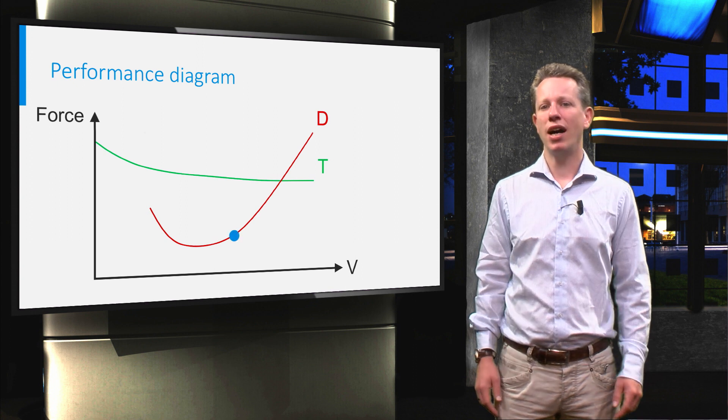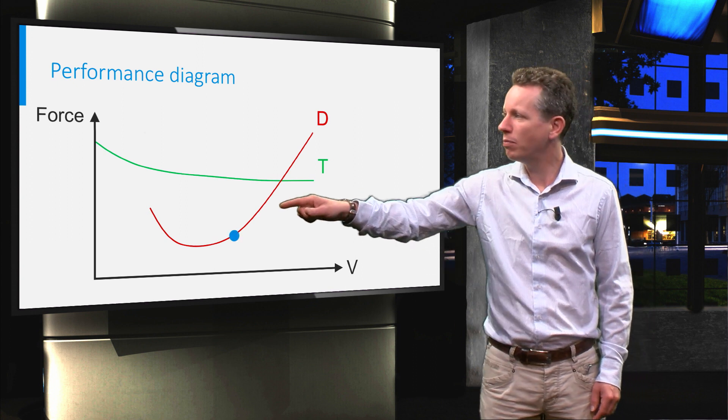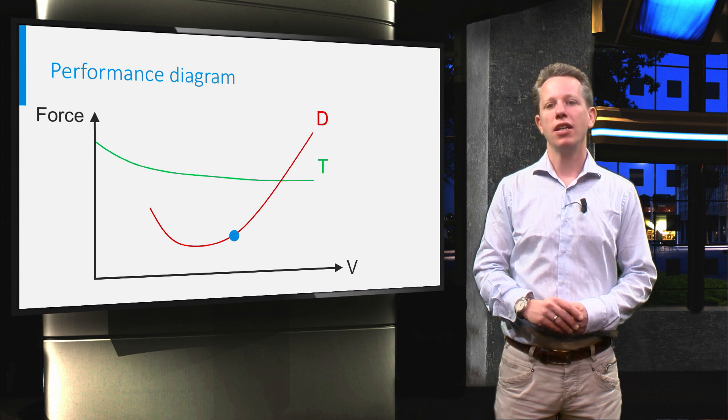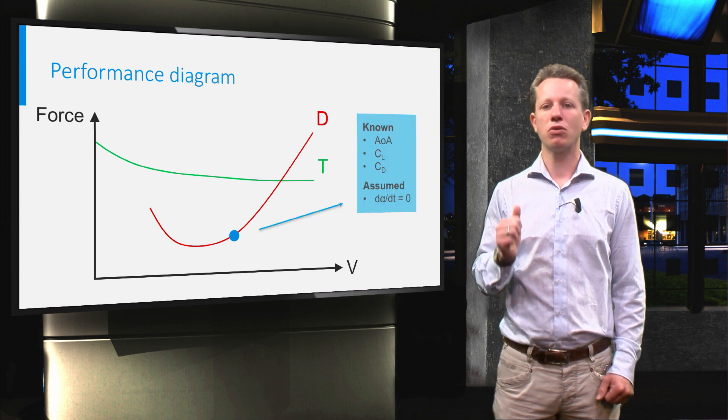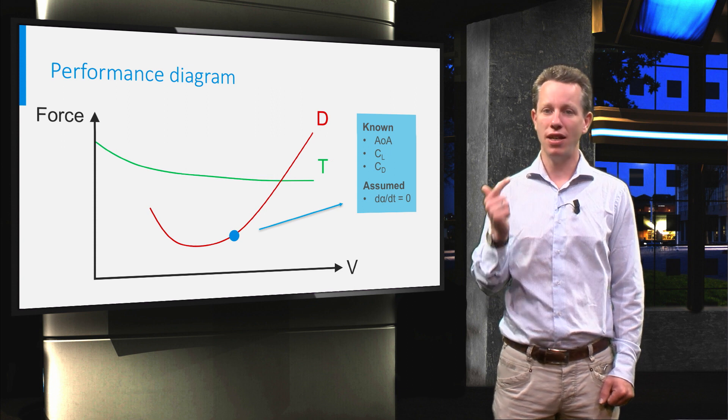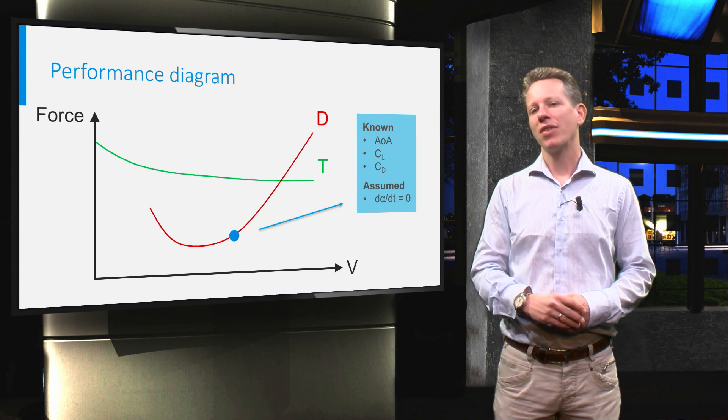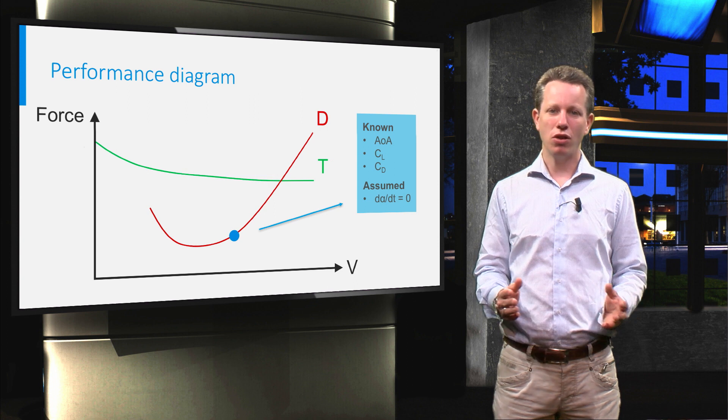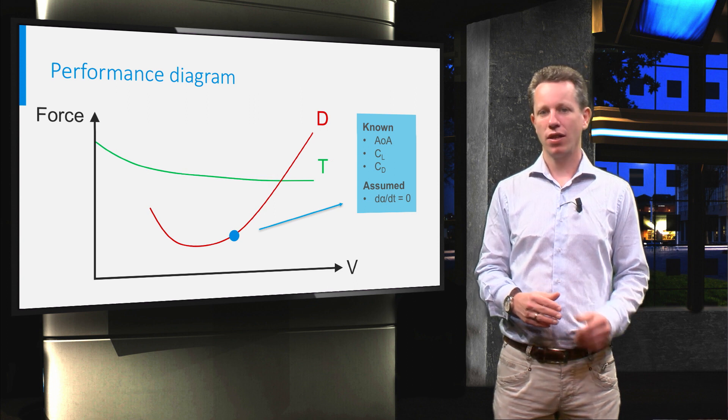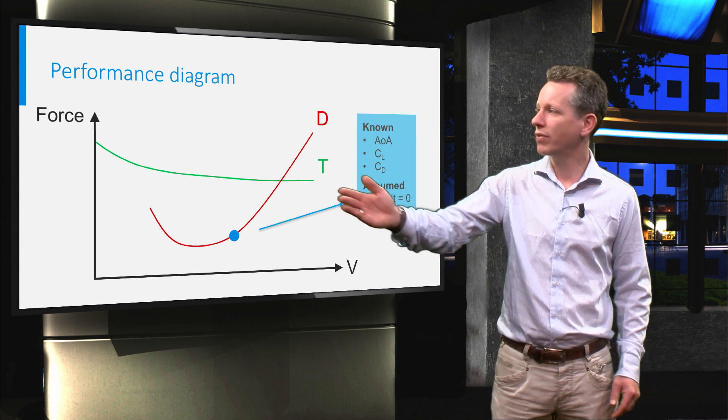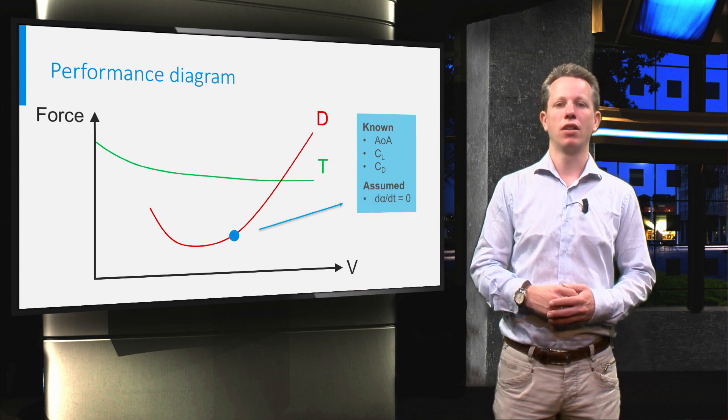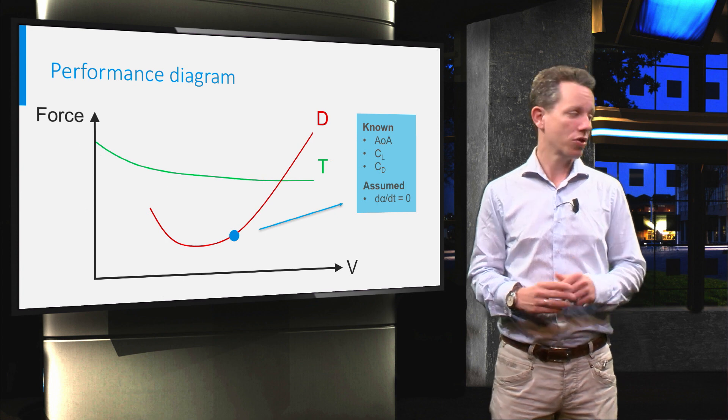To do this I will highlight one specific point in the drag curve. It is associated with a specific angle of attack and therefore to a specific lift coefficient and drag coefficient. Now assume the angle of attack is kept constant. Lift coefficient and drag coefficient are fixed and we determine what happens to airspeed and drag. Let me show you how that works.